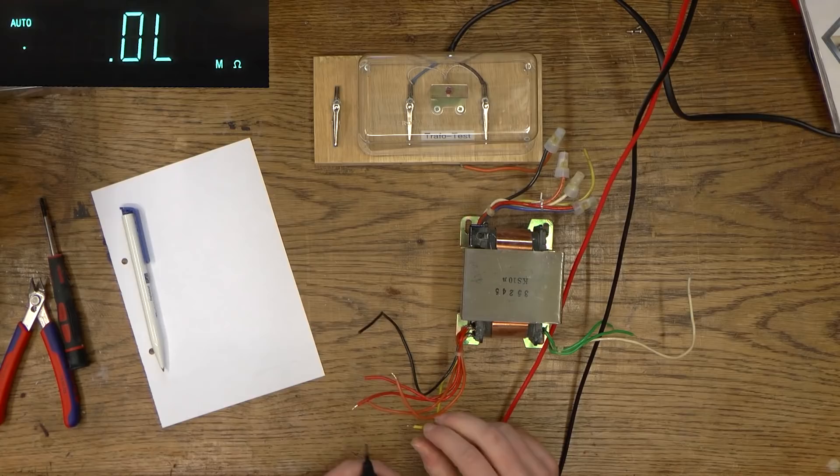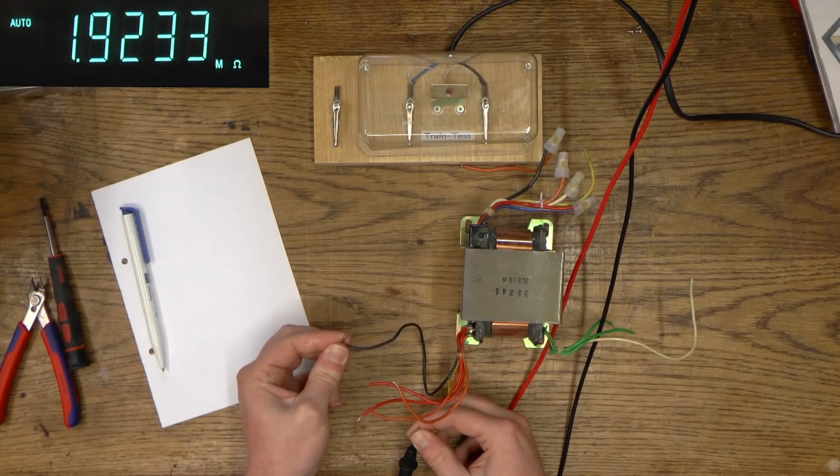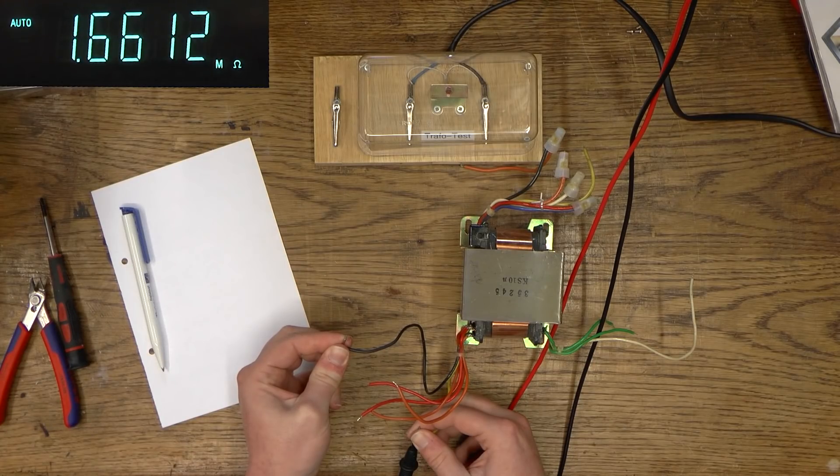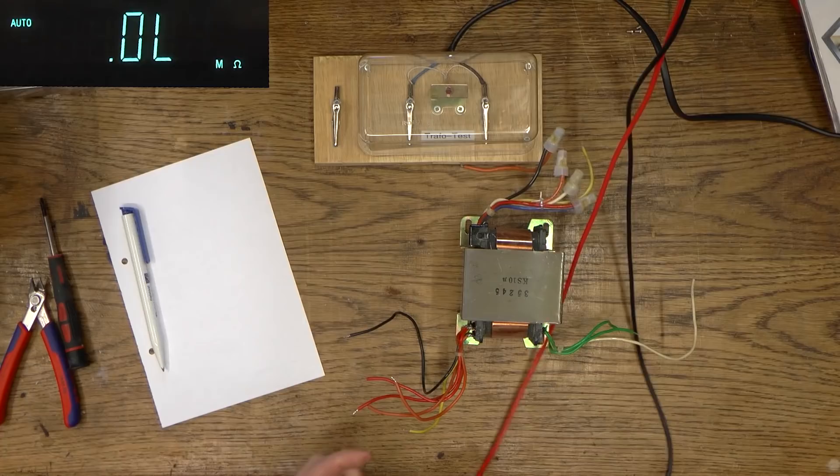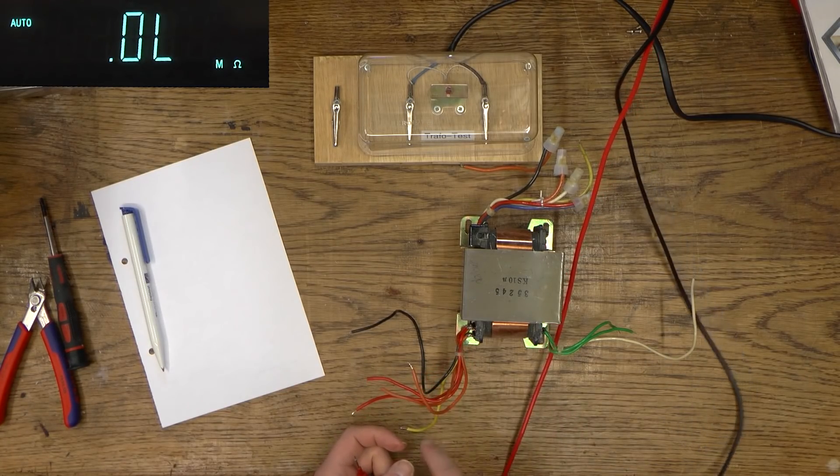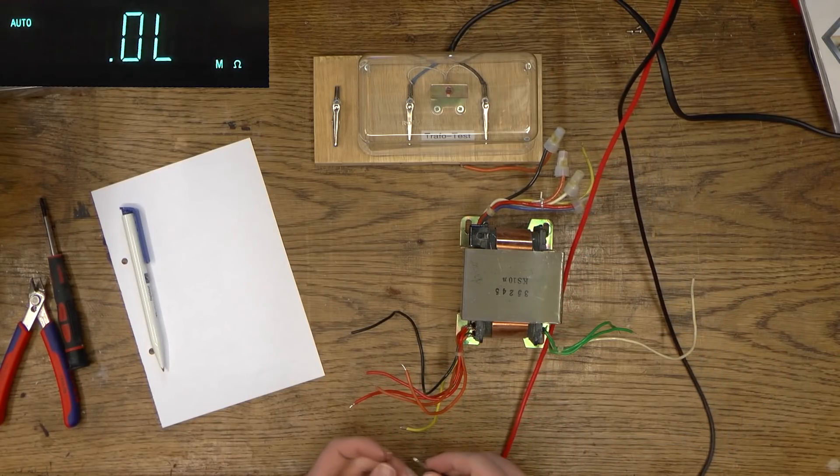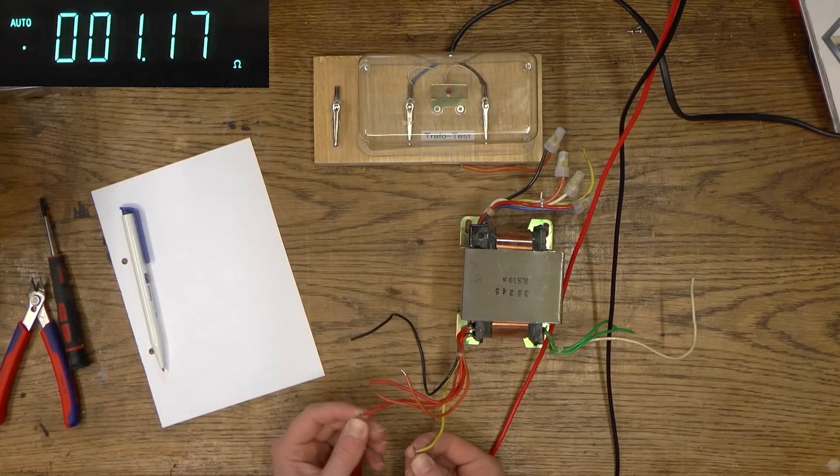And we do have a yellow lead and a black lead left over and now that's in the mega ohms range. So those obviously don't form a winding. So I guess we have or maybe these are some more center tapped windings. That's what it is.